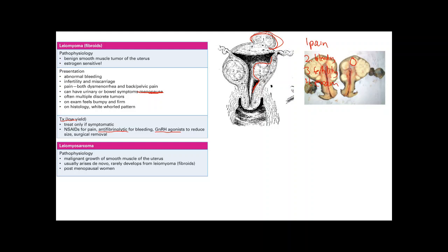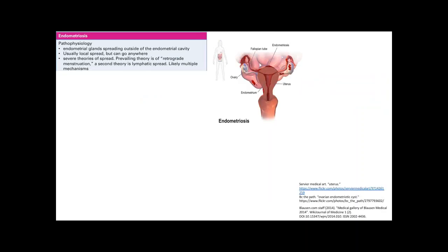Leiomyosarcomas are malignant growths of smooth muscle of the uterus. They usually arise de novo — not from fibroids — and are often seen in postmenopausal women. They typically present as a single lesion with hemorrhage and necrosis, in contrast to fibroids which are multiple lesions without hemorrhage or necrosis. On histology you see necrosis, increased mitotic activity, and cellular atypia.